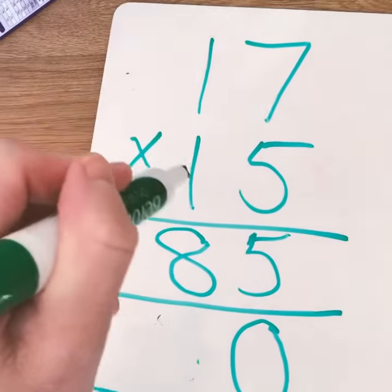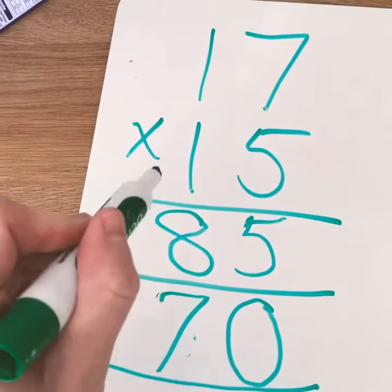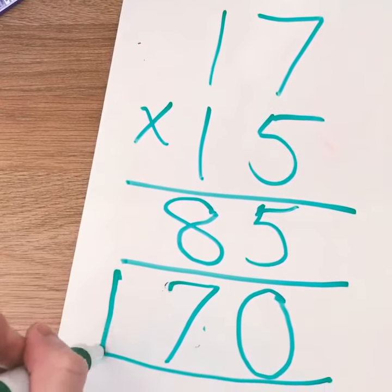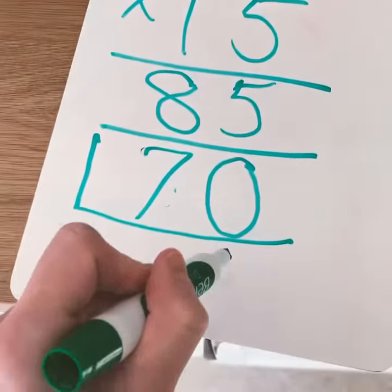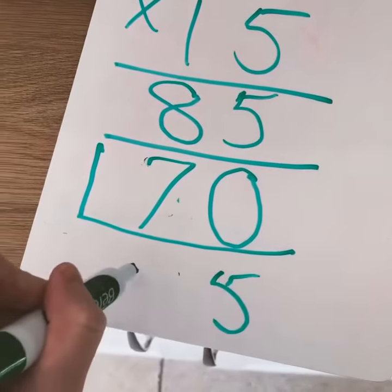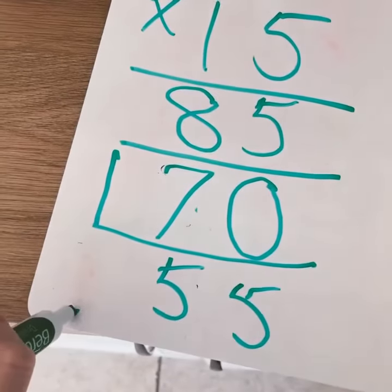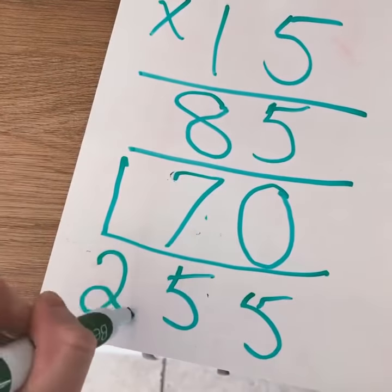So then, really easy. One times seven is seven. One times one is one. And then we add all of this together. Five, fifteen, and two. Two hundred and fifty-five.